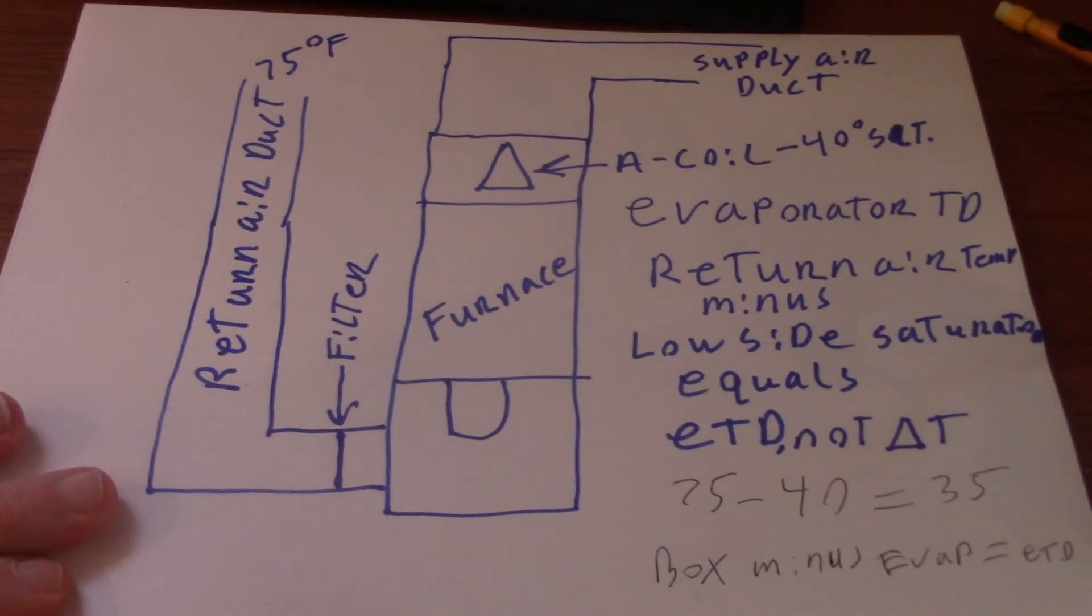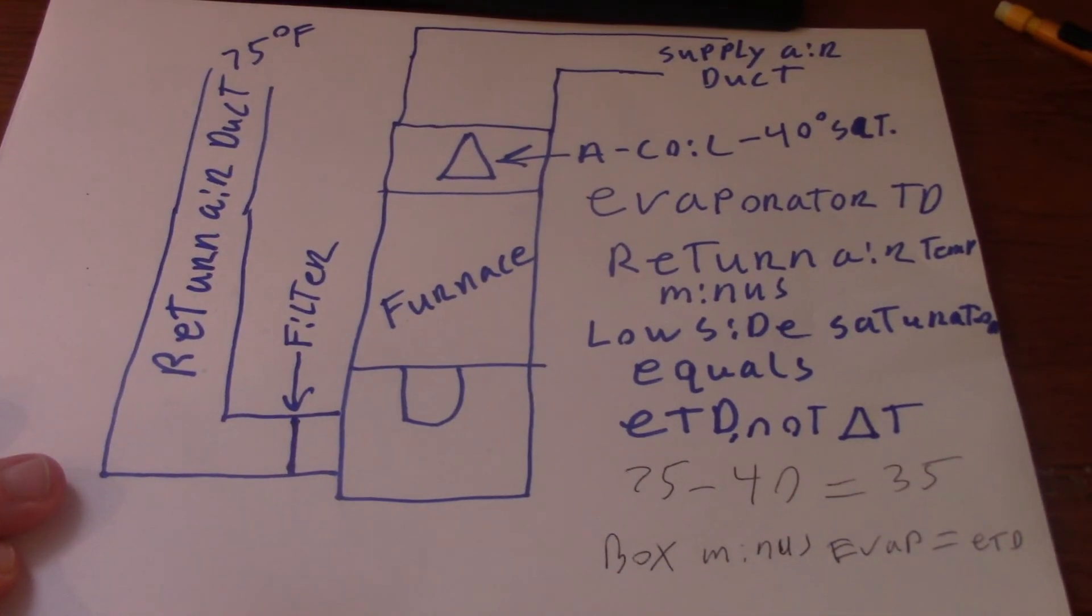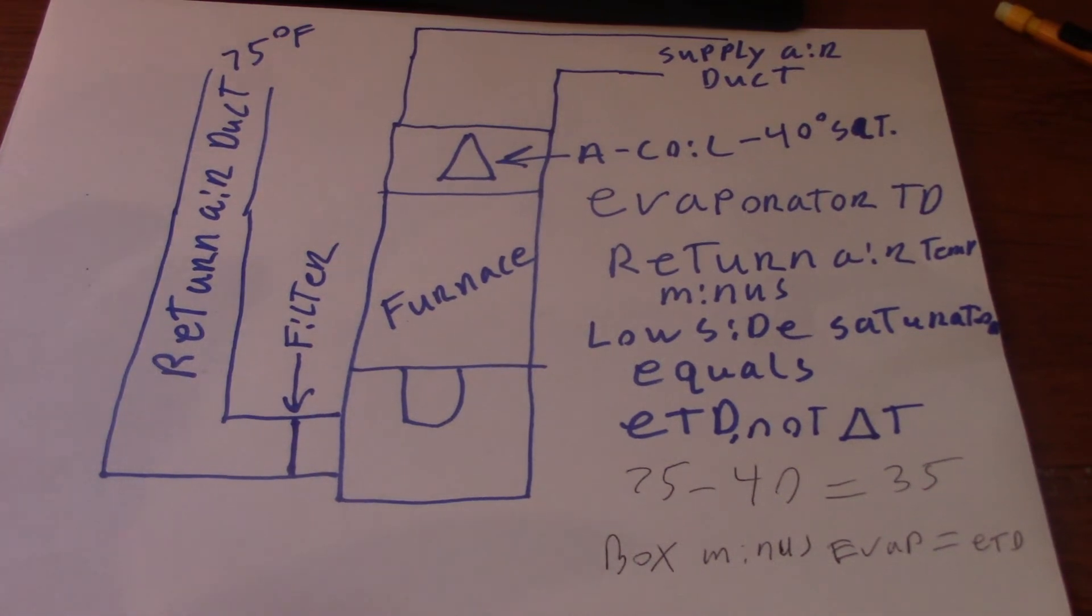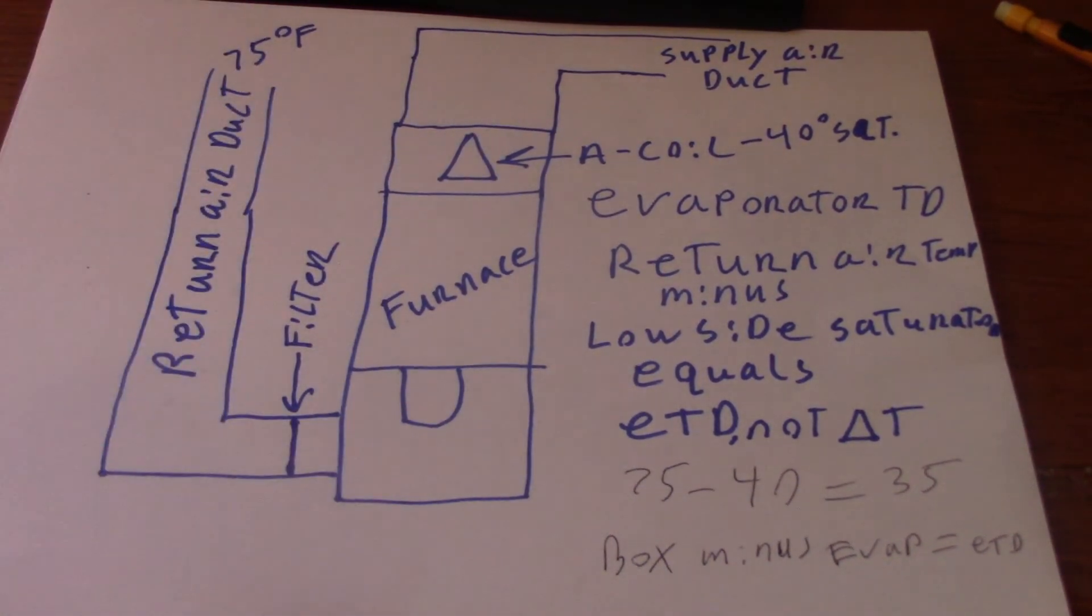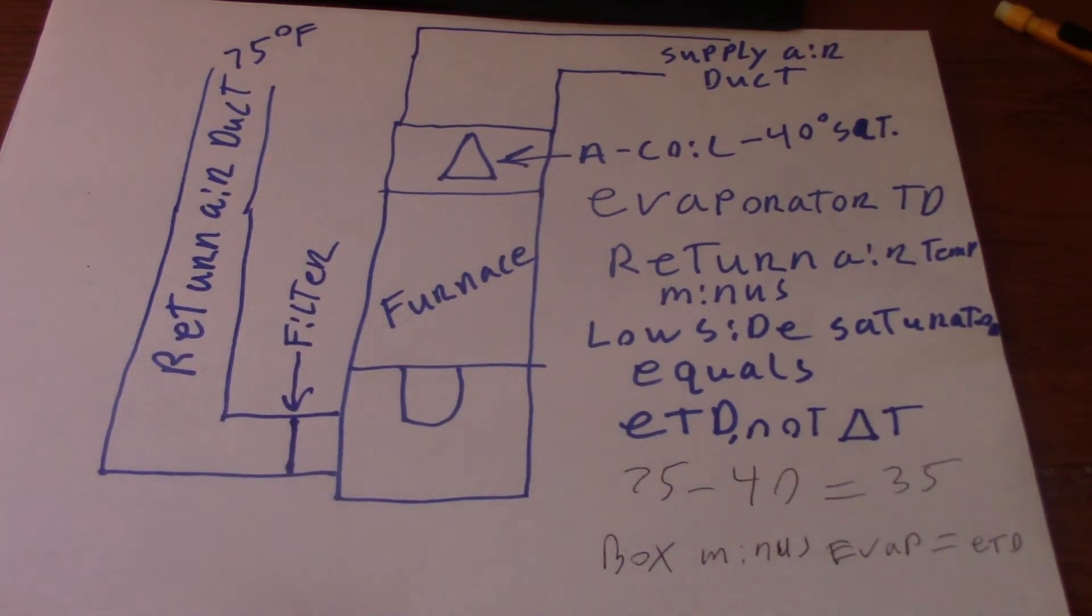It's the exact same formula for a house. Think of it this way: the house is the box. The return air here is pulling air from inside the house, which is the box. So if you look at that aspect, it's the exact same formula. You want a 35 degree evaporator TD to prove your air conditioner is working correctly. This is another check that can be done to ensure you have a correct working air conditioner.